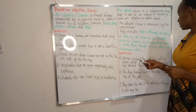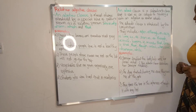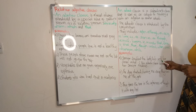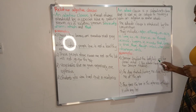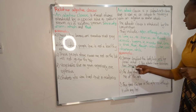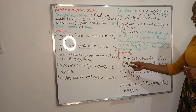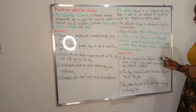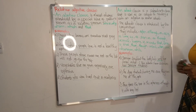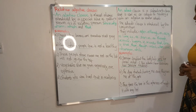'Jennifer scrubbed the bathtub until her arms ached.' Here, 'until' is a conjunction that has been used to introduce our adverb clause: 'until her hands ached.' This is our adverb clause because it describes how Jennifer scrubbed the bathtub.